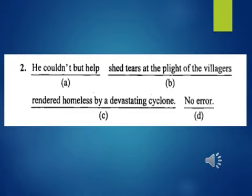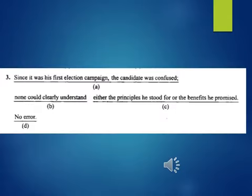Question 2: He couldn't but help, A, shed tears at the plight of the villagers, B, rendered homeless by devastating cyclone, C, no error, D. Question 3: Since it was his first election campaign, the candidate was confused, A, none could clearly understand, B, either the principles he stood for or the benefits he promised, C, no error, D.